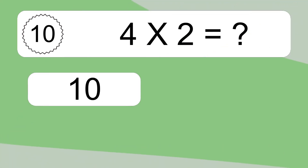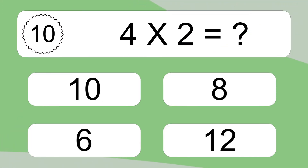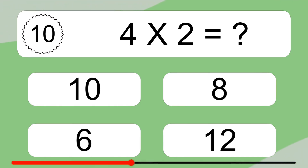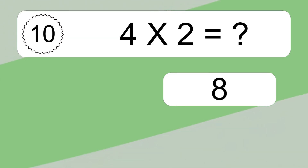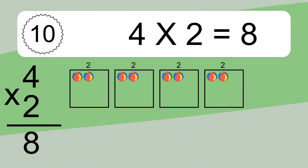4 times 2 equals what? 4 times 2 equals 8.